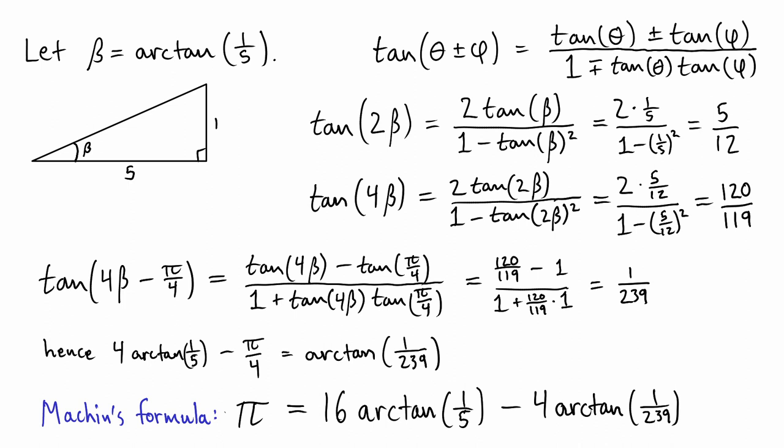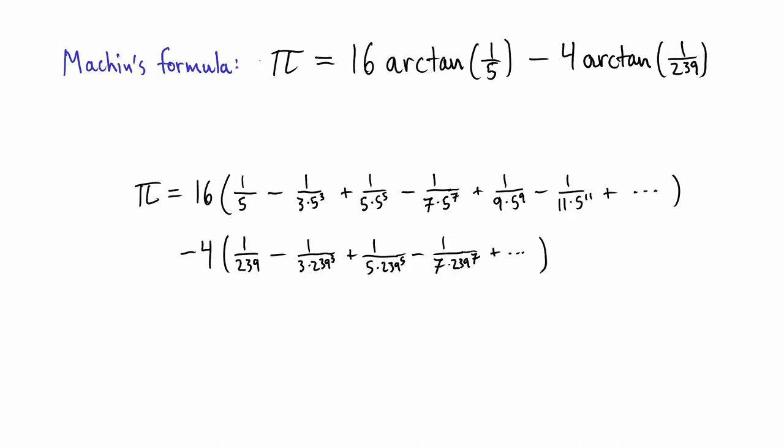The utility of this formula is that we can calculate each arctan using the Gregory series, whose convergence accelerates the closer the arguments to the functions get to 0. Both of these series converge relatively quickly. 71 terms of the first and 21 terms of the second are sufficient to calculate Pi to Machin's 100 places.